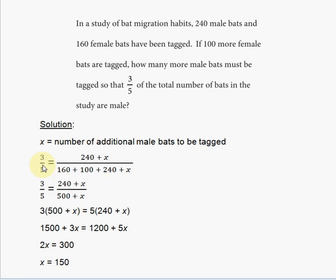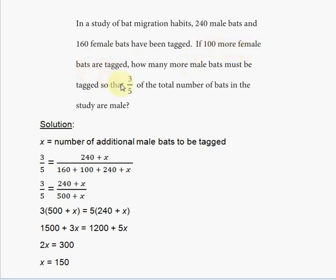Three-fifths represents the fraction after you add the additional males. The numerator 3 represents the total number of males after adding X, and the denominator 5 represents the total number of everyone together — that means 240 original male bats plus X, plus 160 female bats, plus 100 additional female bats.